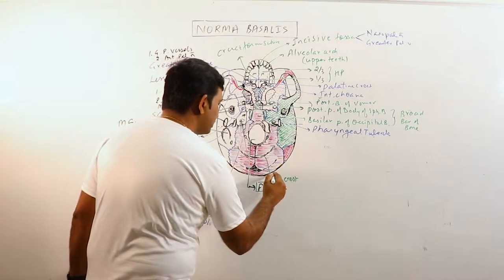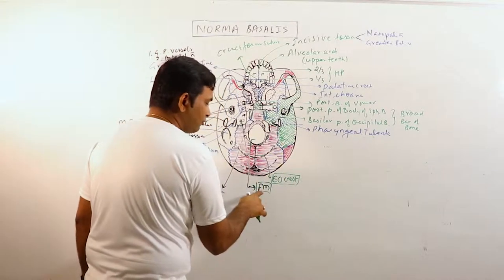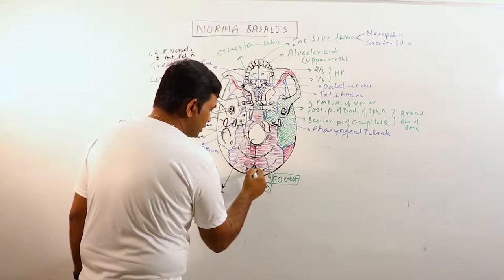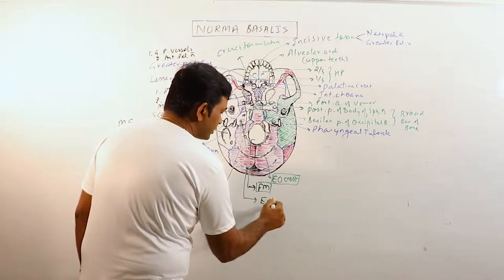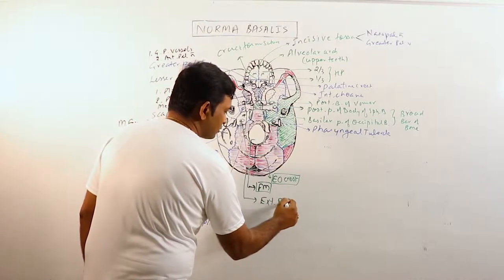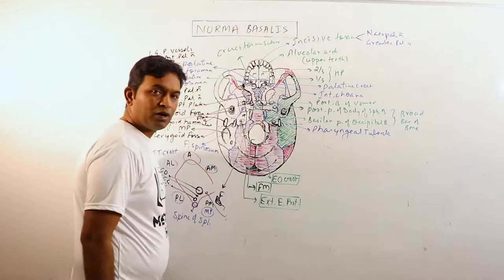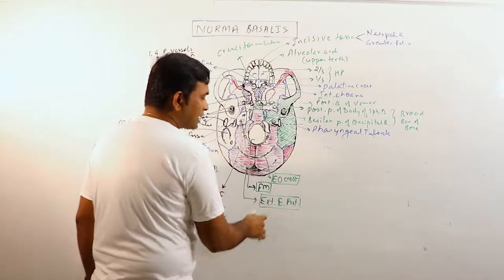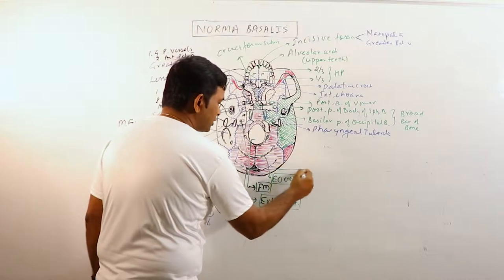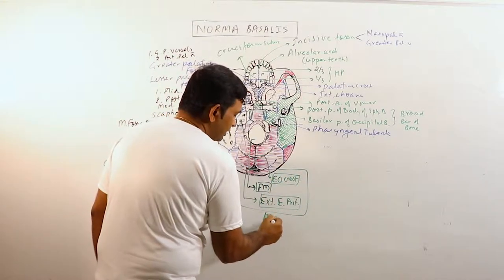External occipital crest extends from the foramen magnum up to the external occipital protuberance. We have discussed them in norma occipitalis. This marks the junction between the head and neck. So these three structures form the median area.